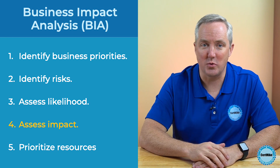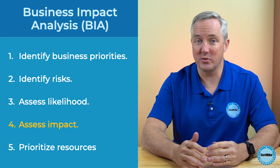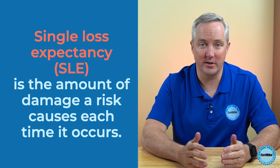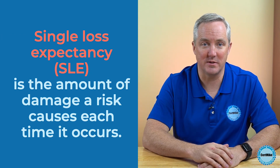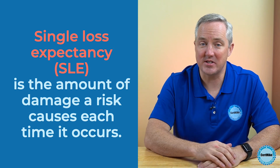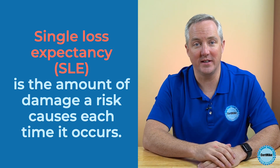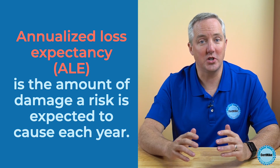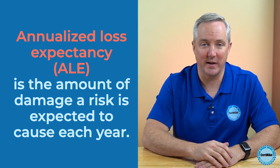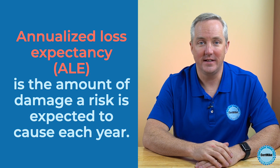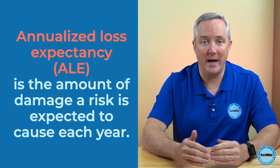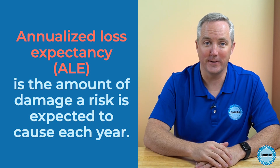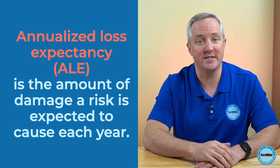We also use quantitative measures in step four to assess the impact of a risk. Here, we try to figure out how much damage will occur each time a risk materializes — that's the Single Loss Expectancy, or SLE. We can use the SLE and the ARO to compute the Annualized Loss Expectancy, or ALE: the amount of damage we expect a risk to cause in any typical year, measured in dollars.